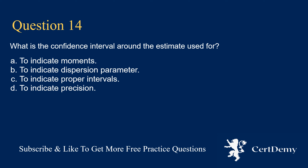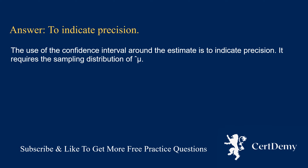Question 14. What is the confidence interval around the estimate used for? Options: to indicate moments; to indicate dispersion parameter; to indicate proper intervals; to indicate precision. The answer is: to indicate precision. The use of the confidence interval around the estimate is to indicate precision; it requires the sampling distribution of mu.